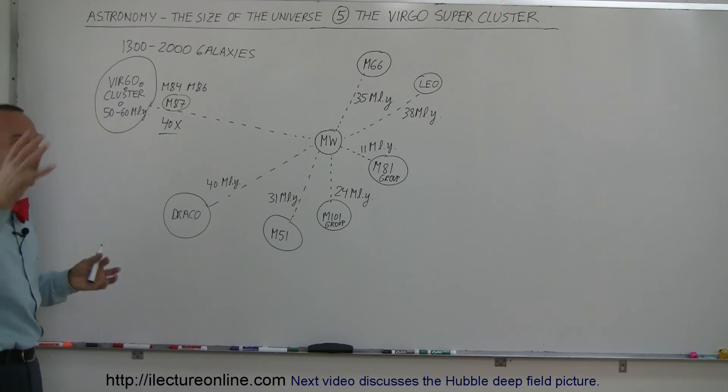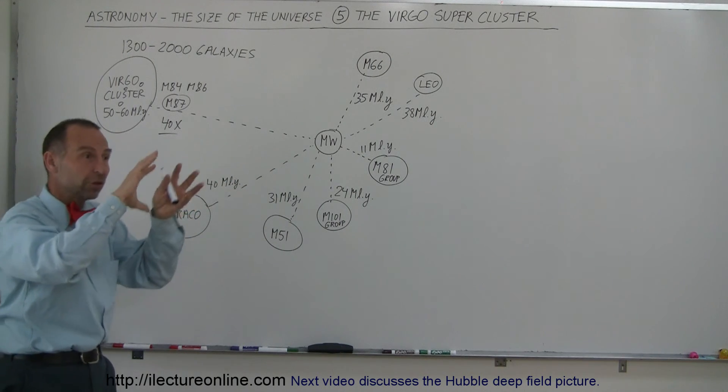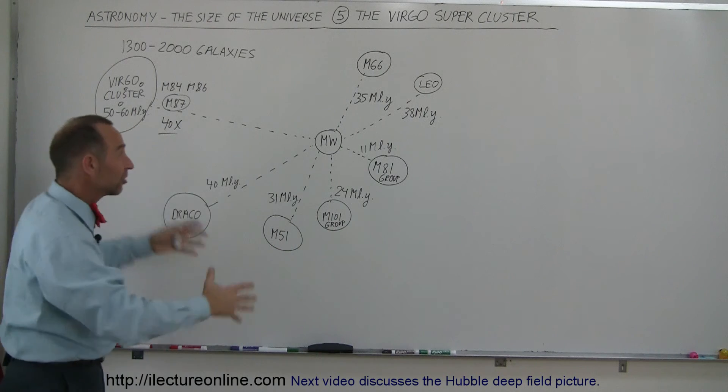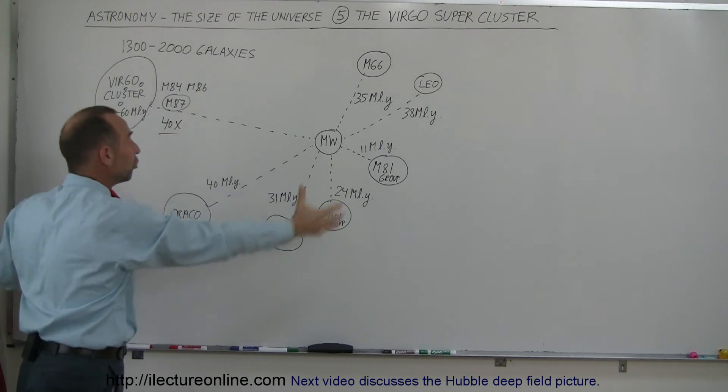And when we look around in our galaxy, that's what we see. We see galaxies, and we see that there's clusters of galaxies, and then we see that there's clusters of clusters of galaxies, like this, forming a super-cluster.